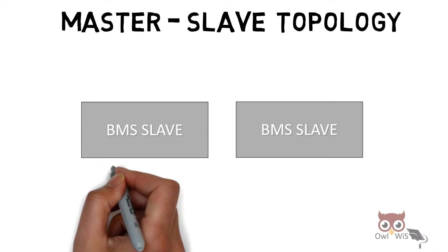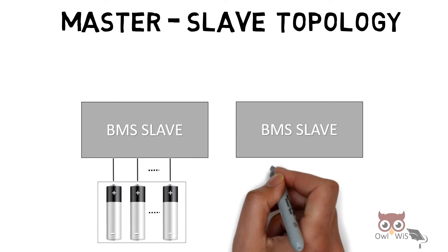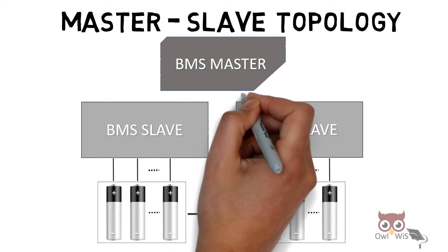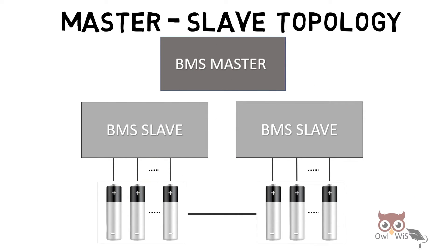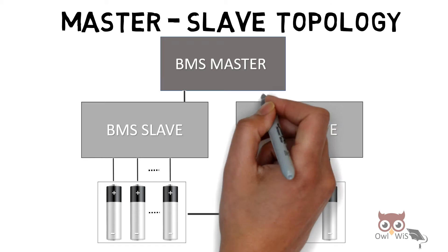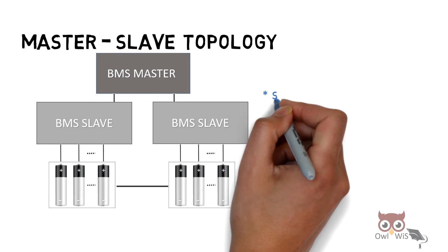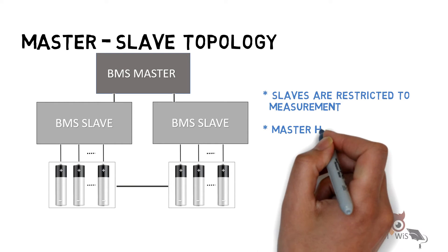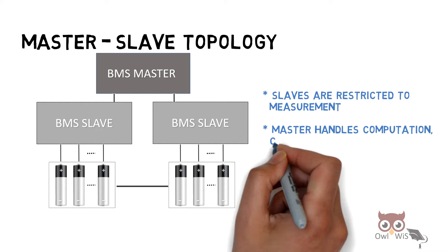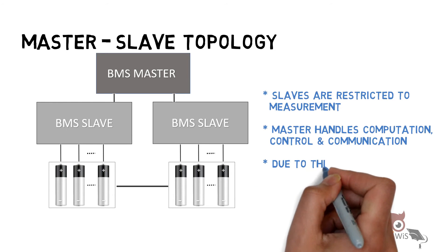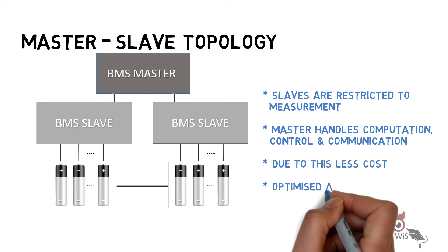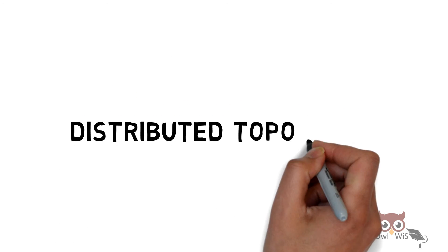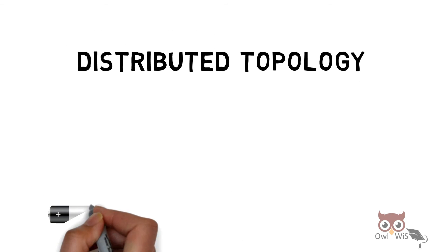Master Slave Topology: This is similar to Modular. Here, it has many BMS slaves which monitor the individual cells of the battery pack, and there is a BMS master which monitors these BMS slaves. The BMS slaves are restricted only to measurement activity. The master handles computation, control, and communication. Due to this, it is a less cost optimized approach.